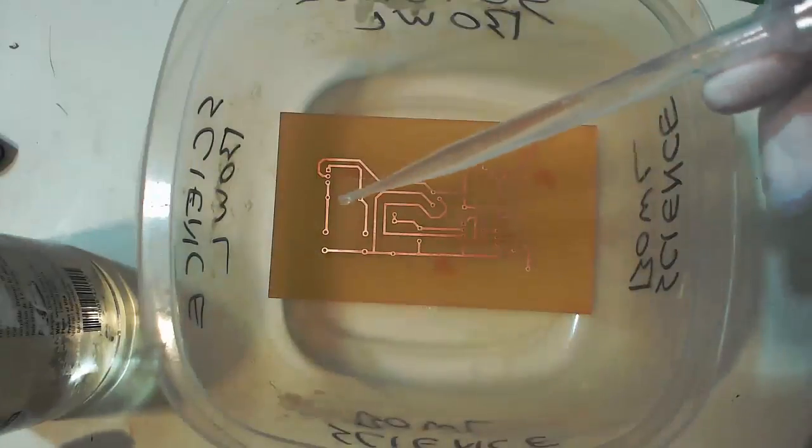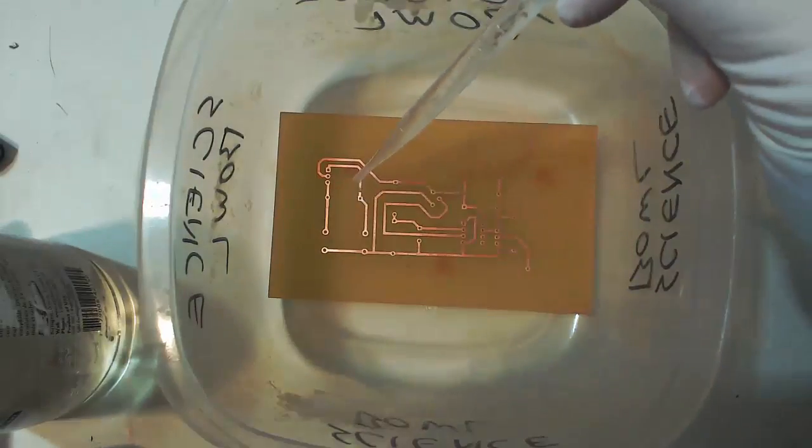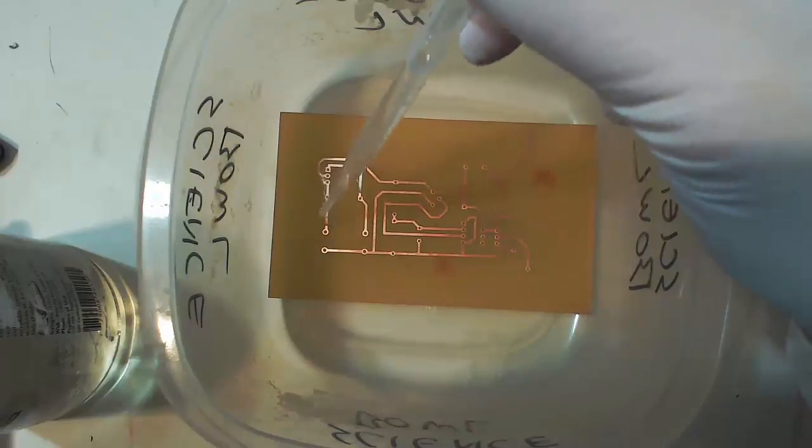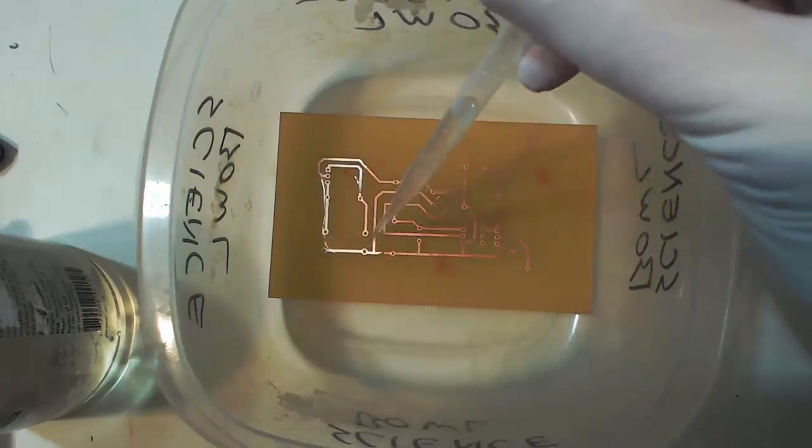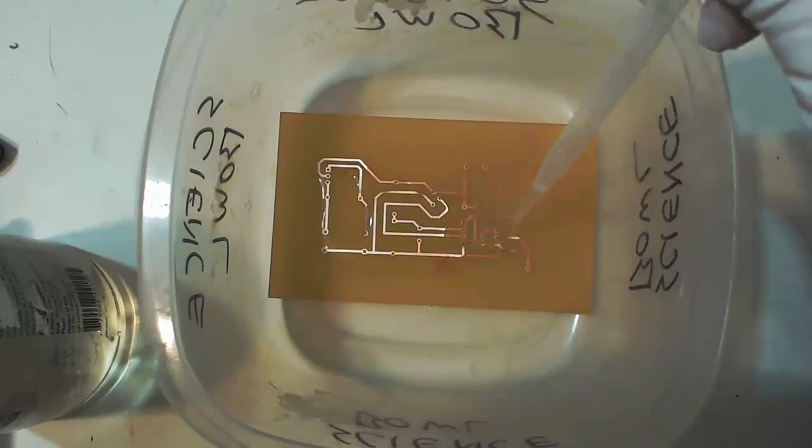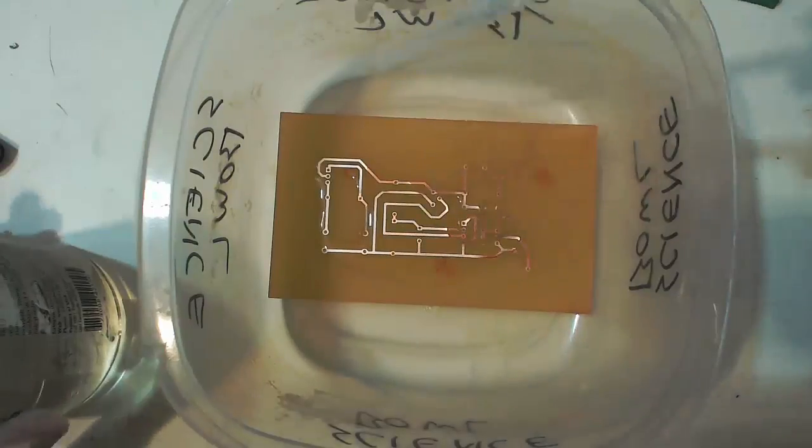Now that everything's drilled out and ready, I'm going to tin plate the traces. Tinning the traces allows solder to readily adhere to them, as well as protecting the copper traces from corrosion and oxidation. So it has twofold benefits.